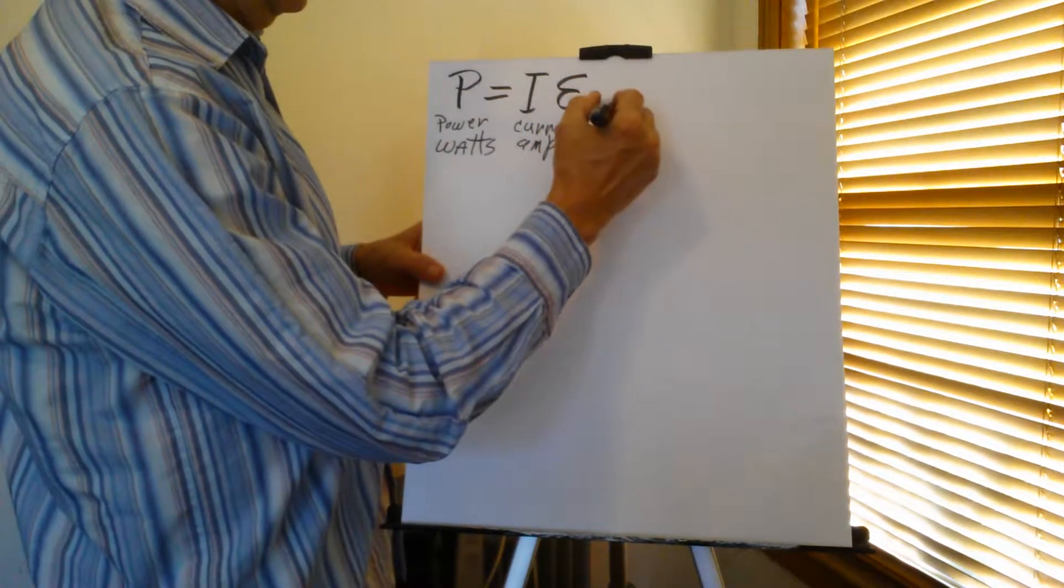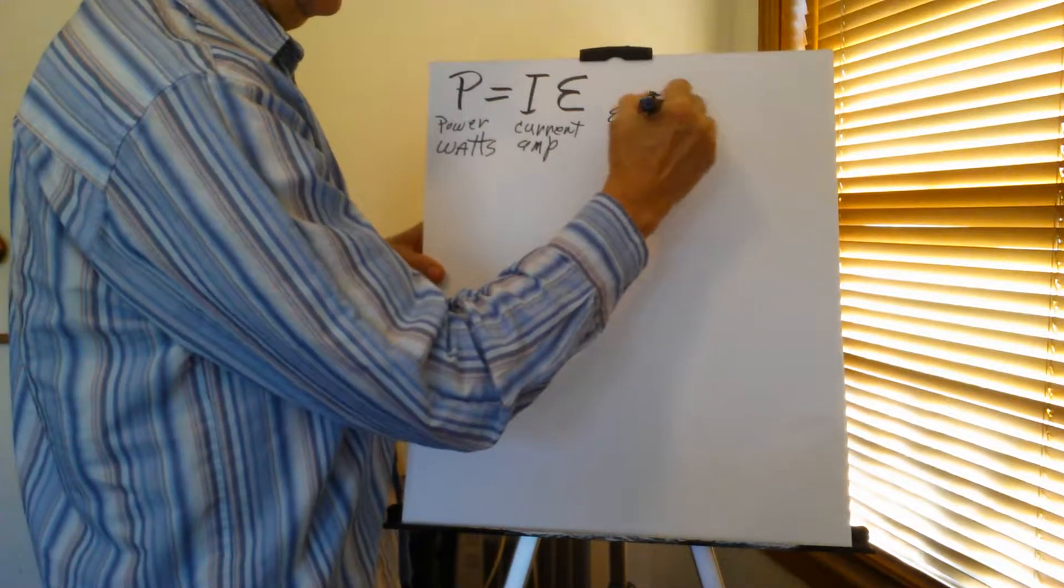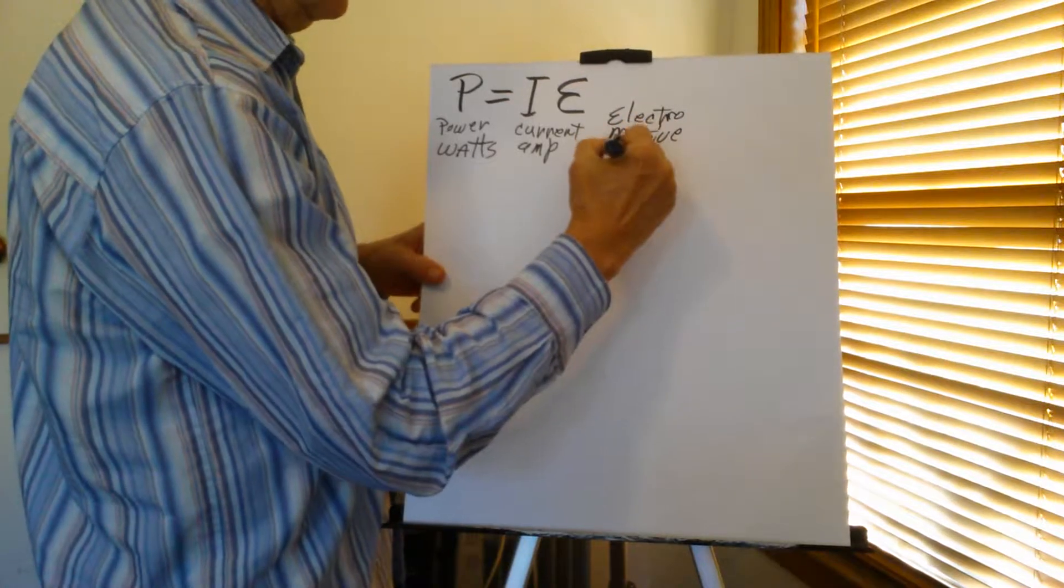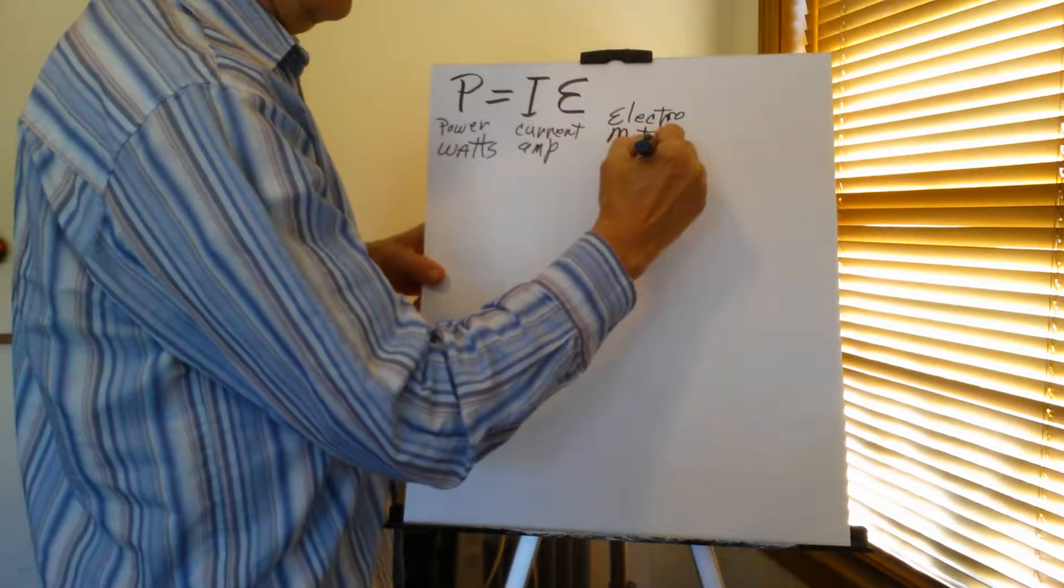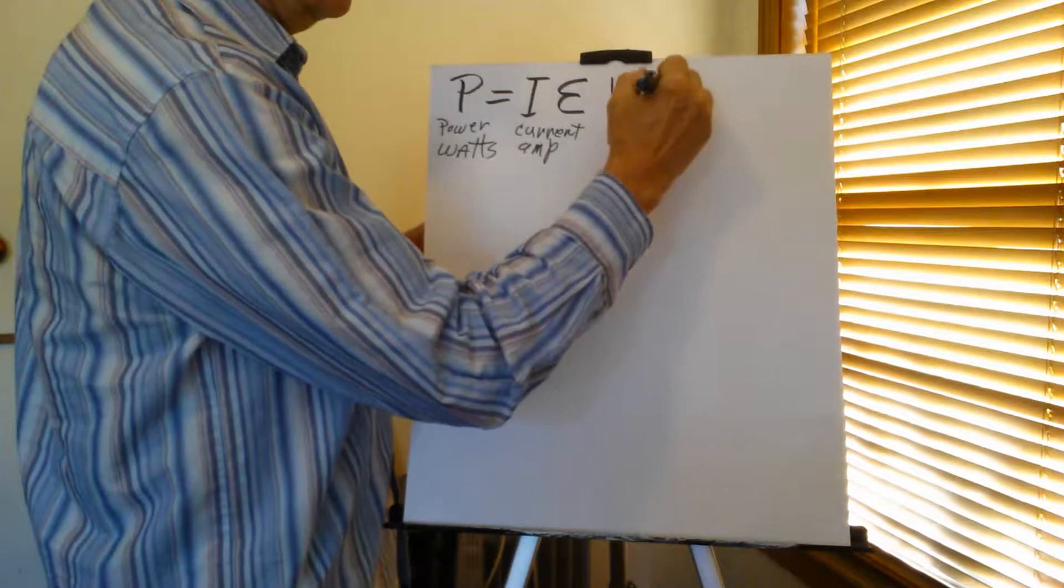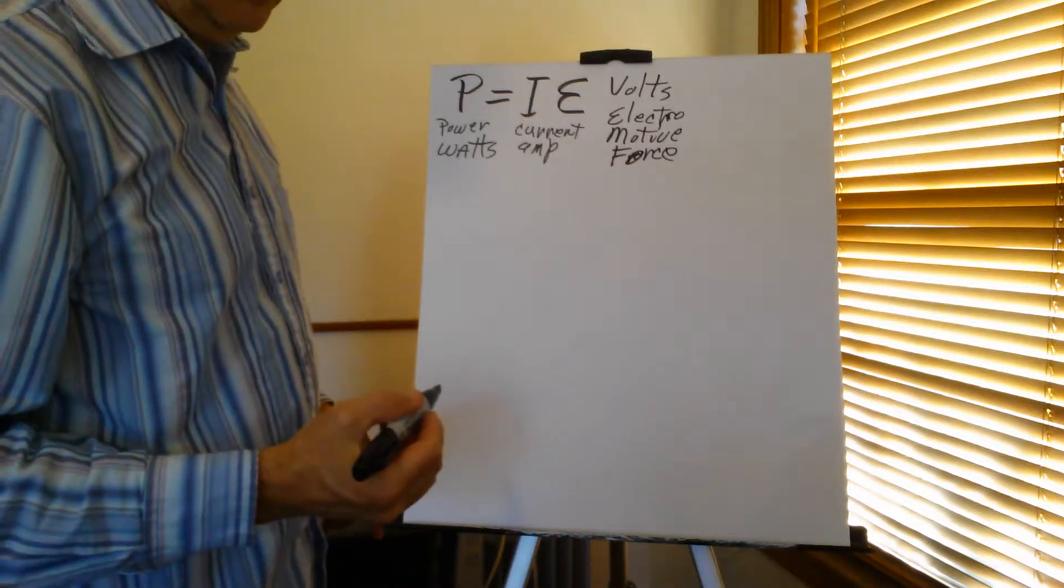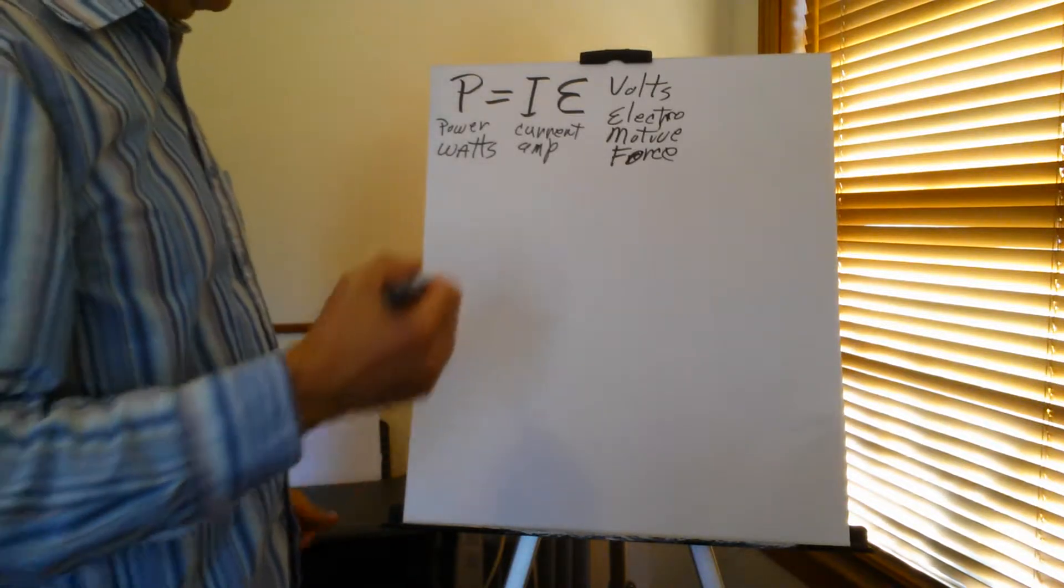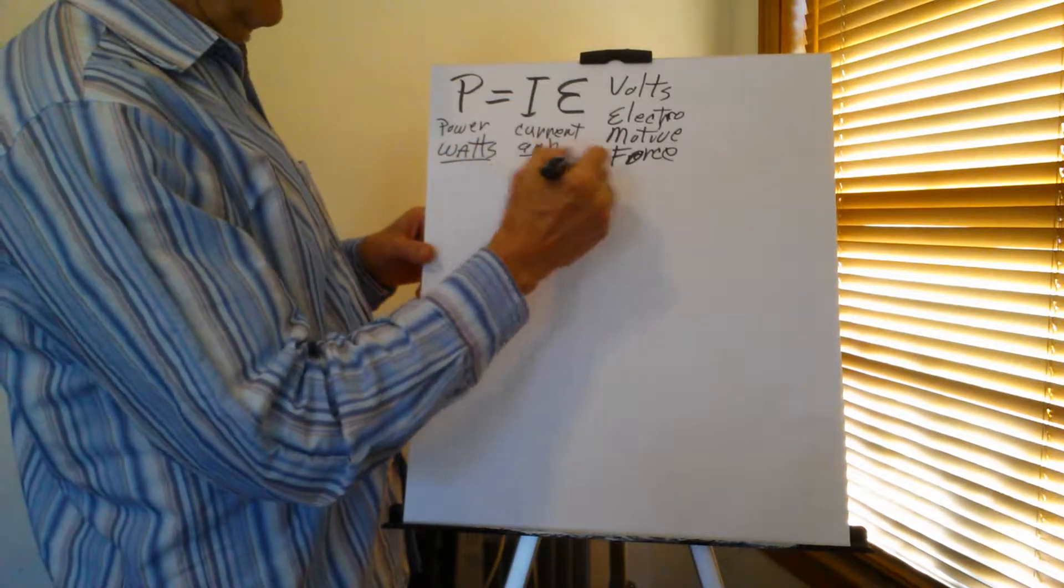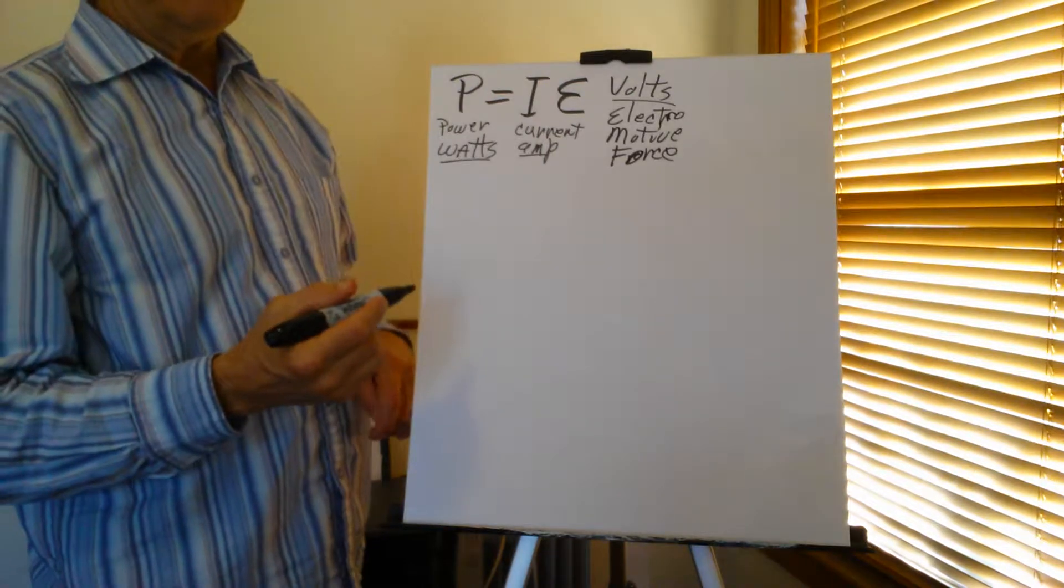E is electromotive force measured in volts. Voltage, voltair, that is his name. That's another story altogether. So you have your power, your amperage and your voltage in this formula here.